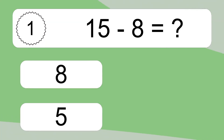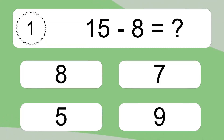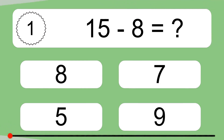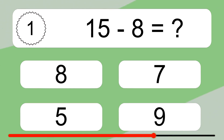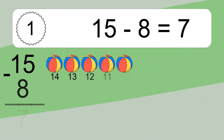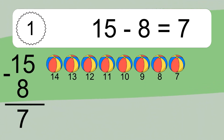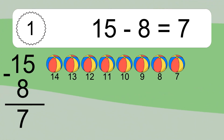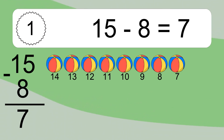15 minus 8 equals what? 15 minus 8 equals 7. Let's count it: 14, 13, 12, 11, 10, 9, 8, 7.